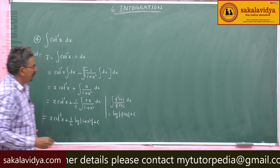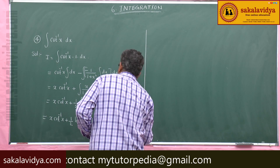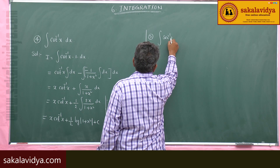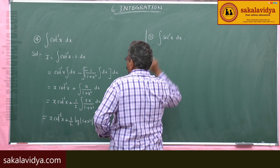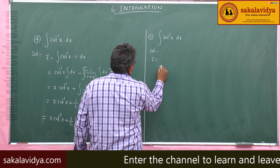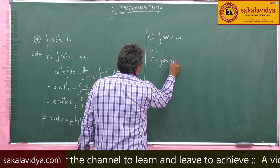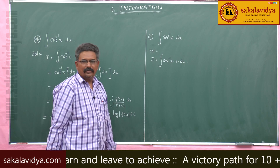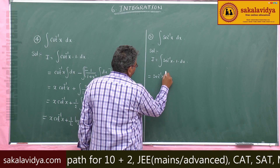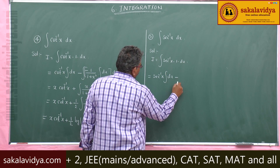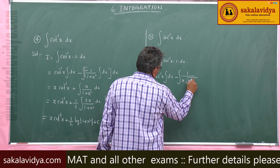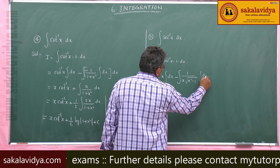Let us find out the integral of secant inverse x. I equals to integral of secant inverse x into 1 dx. First function is secant inverse x, integral of dx, minus derivative of secant inverse x which is 1 by x under root of x square minus 1, integral dx, and whole dx.